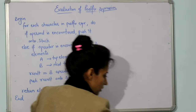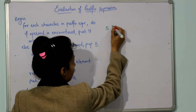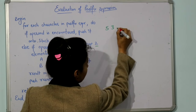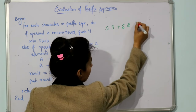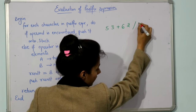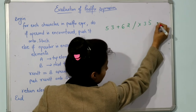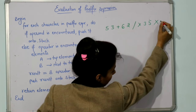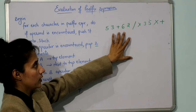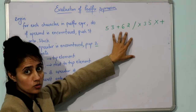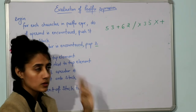Now let us take one more, complex example: 5, 3, plus, 6, 2, divide, multiply, 3, 5, multiply, plus. This is the postfix expression and you are supposed to evaluate it and find out the result.